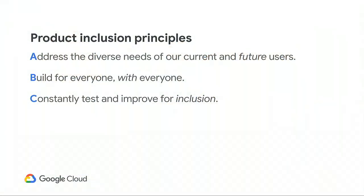Before we jump into our panel, I wanted to leave you with three principles — the ABCs of product inclusion. A: address the diverse needs of current and future users, because those numbers are growing and shifting rapidly. B: build for everyone, with everyone — that 'with everyone' is the important part. C: constantly test and improve for inclusion. It's not enough to ask diverse participants one time at the beginning. It's a constant iteration. It'll never probably be right, but that's okay — it's something you're constantly going to have to work at, and that's the exciting part.